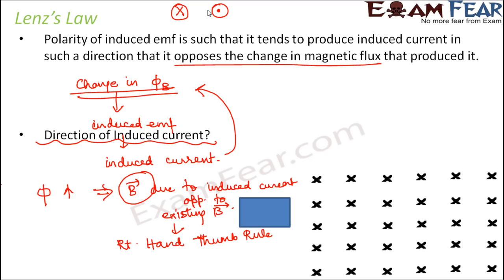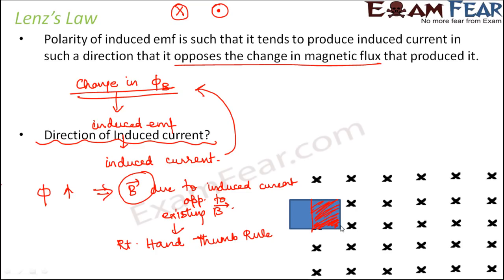Right now the conductor is outside the vicinity of the magnetic field, so the area within the magnetic field is zero. Now as the conductor moves in this fashion, roughly this much area of the conductor is within the magnetic field. Due to this movement, the area of the conductor increased, and since the area increased, the magnetic flux also increased. Since the magnetic flux increased, as per our rule, the magnetic field due to the induced current is opposite to the existing magnetic field. The existing magnetic field is in the downward direction, so the magnetic field due to the induced current will be in the upward direction.